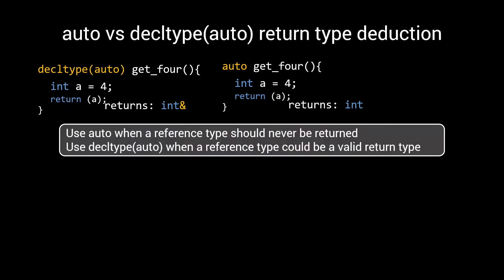Use auto when a reference type should never be returned, as auto will never deduce to a reference type. Use decltype auto when a reference type could be a valid return type. In this case, clearly auto is the safer option.